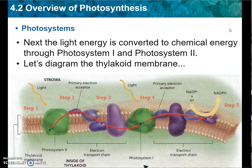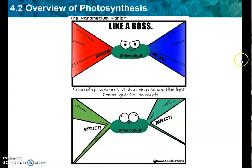The light energy is converted to chemical energy through what we call Photosystem I and Photosystem II. We will diagram the thylakoid membrane in class and discuss what each of these primary electron acceptors and energy molecules do. And just a fun note for the lesson: chlorophyll is awesome at absorbing red and blue light — green light, not so much.